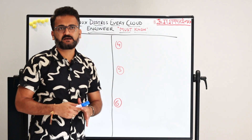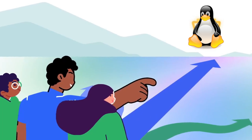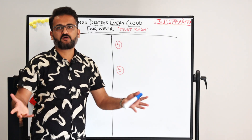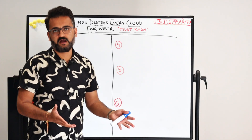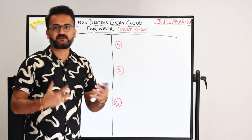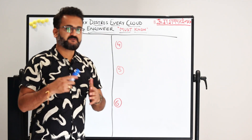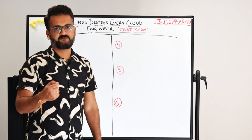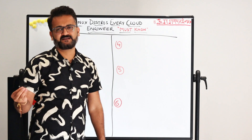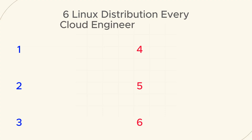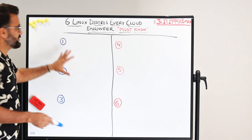By default you will say I'll choose Linux operating system — yes, we know you will choose Linux because it is what everything is running on right now. But which flavor would you prefer? That is the catch, because we do tend to work with multiple flavors but we do not understand the applicability of those distributions. In this video we'll talk about six Linux distributions which every cloud engineer must know.